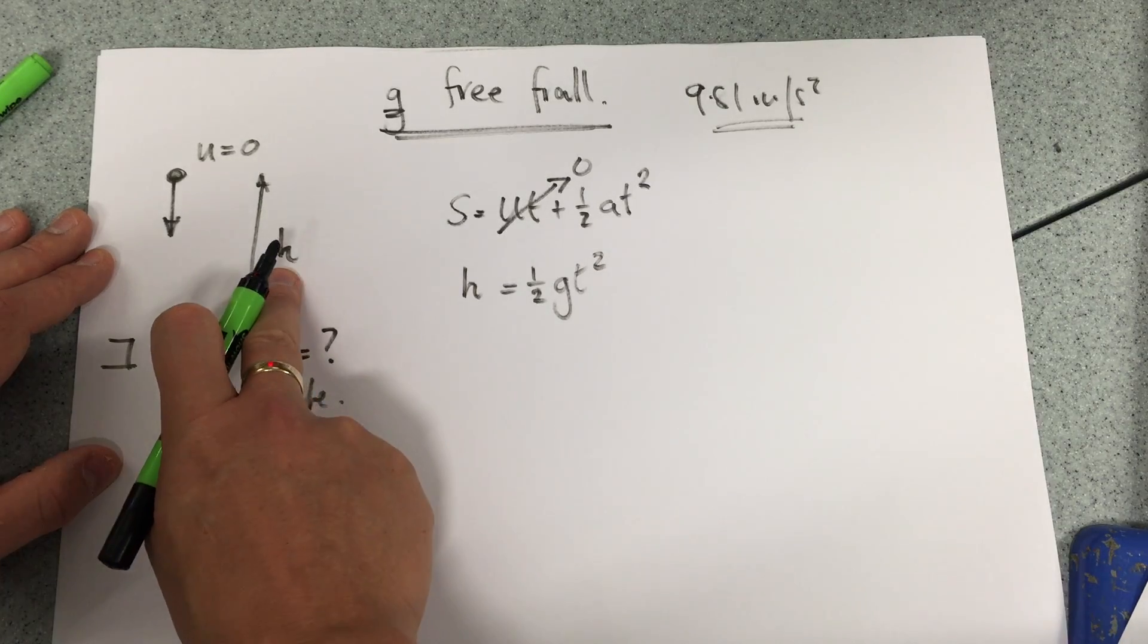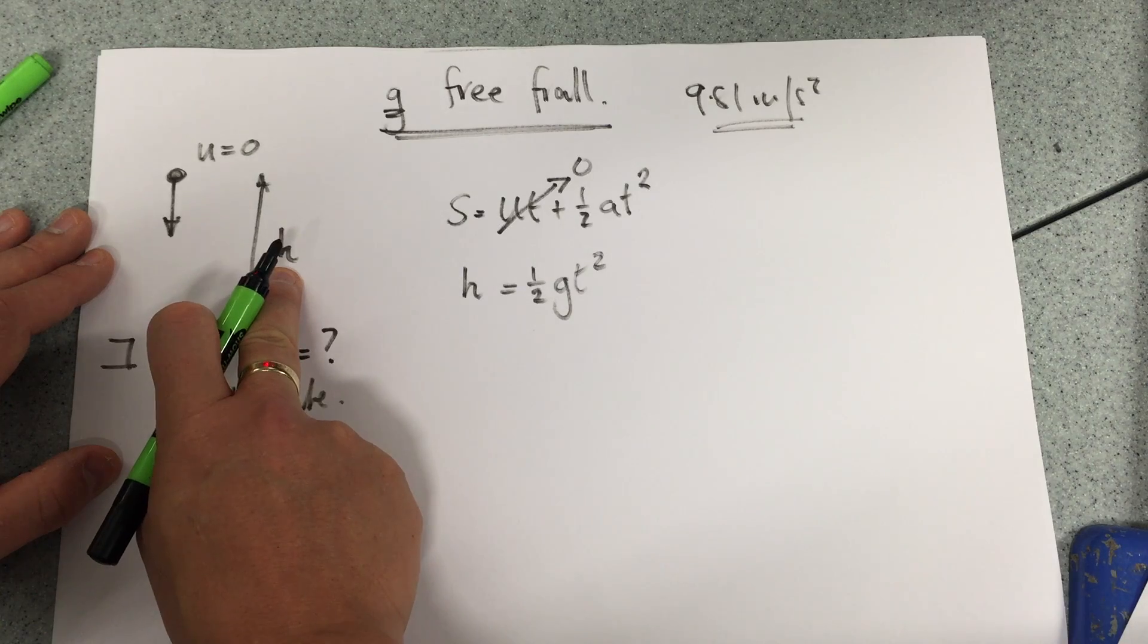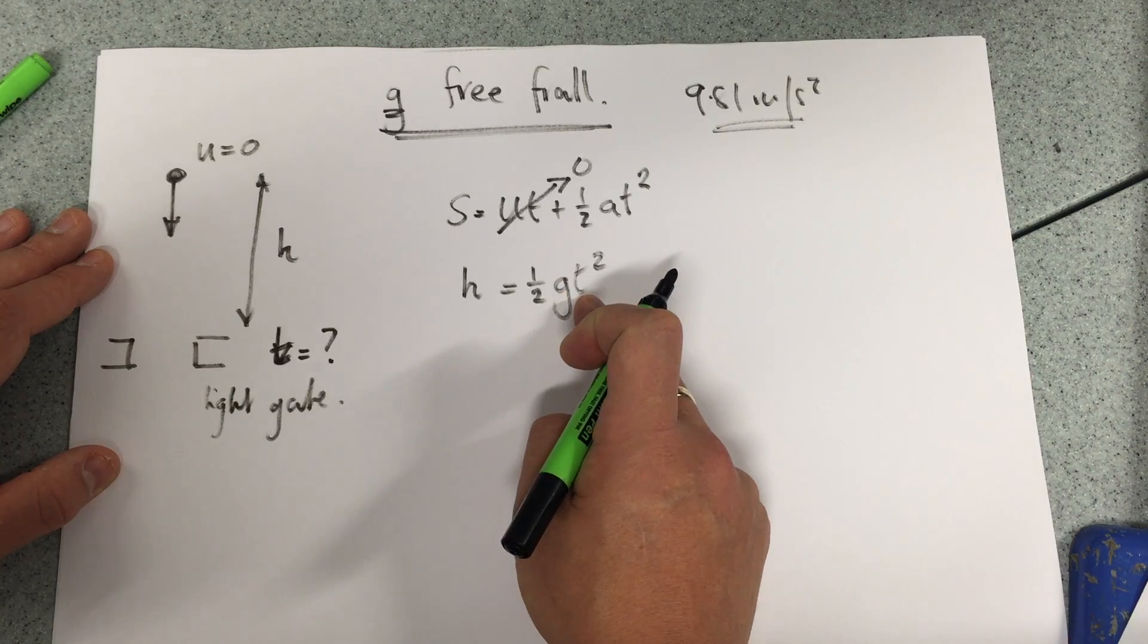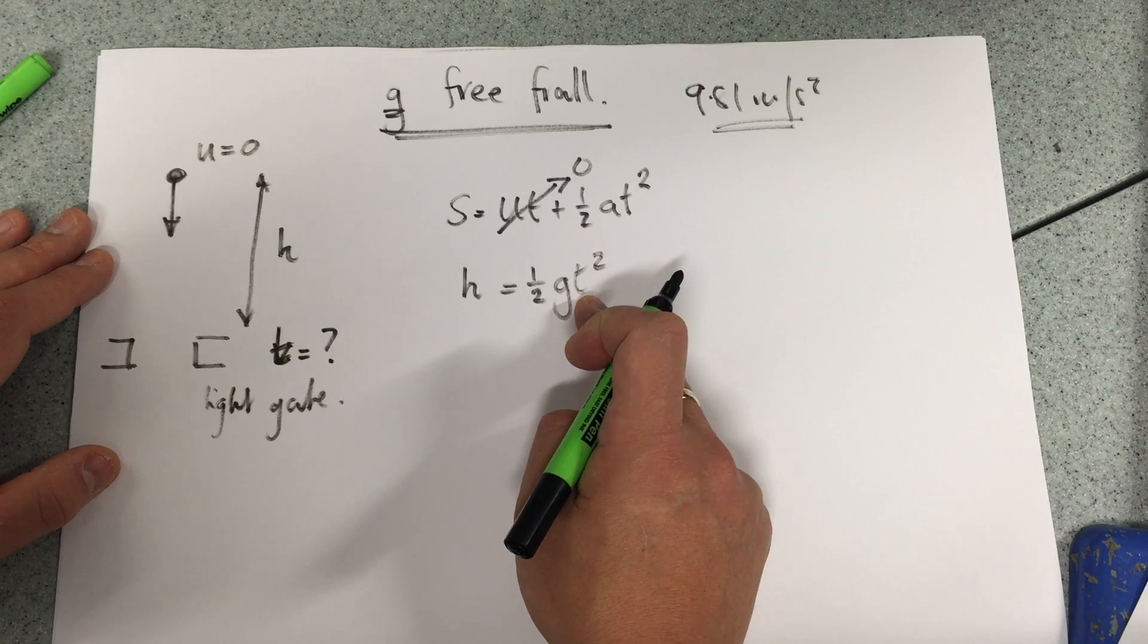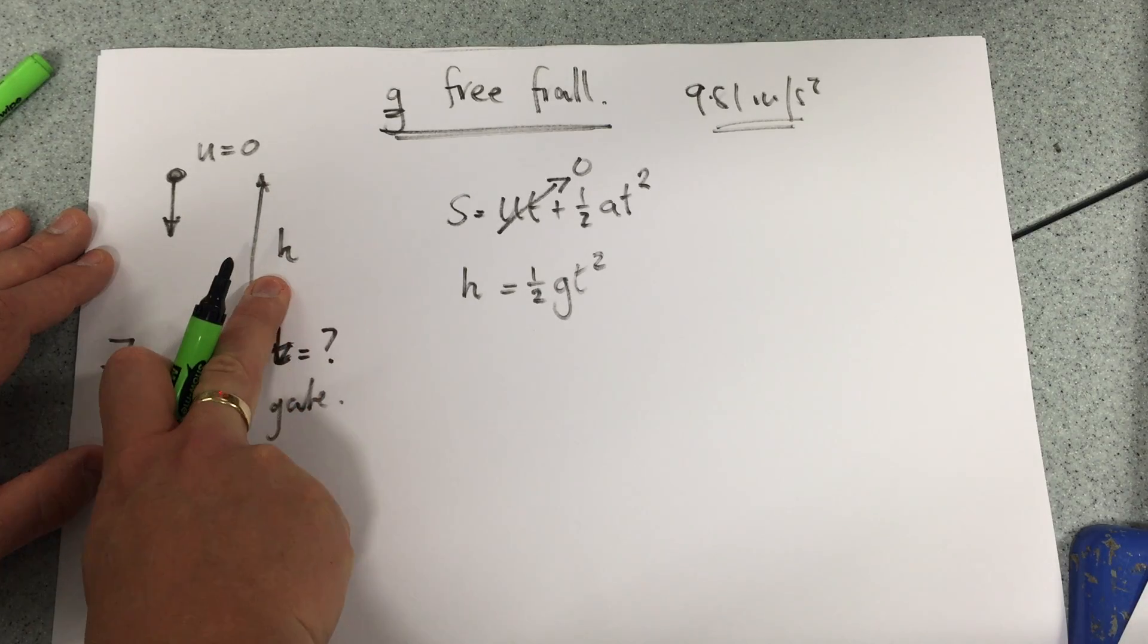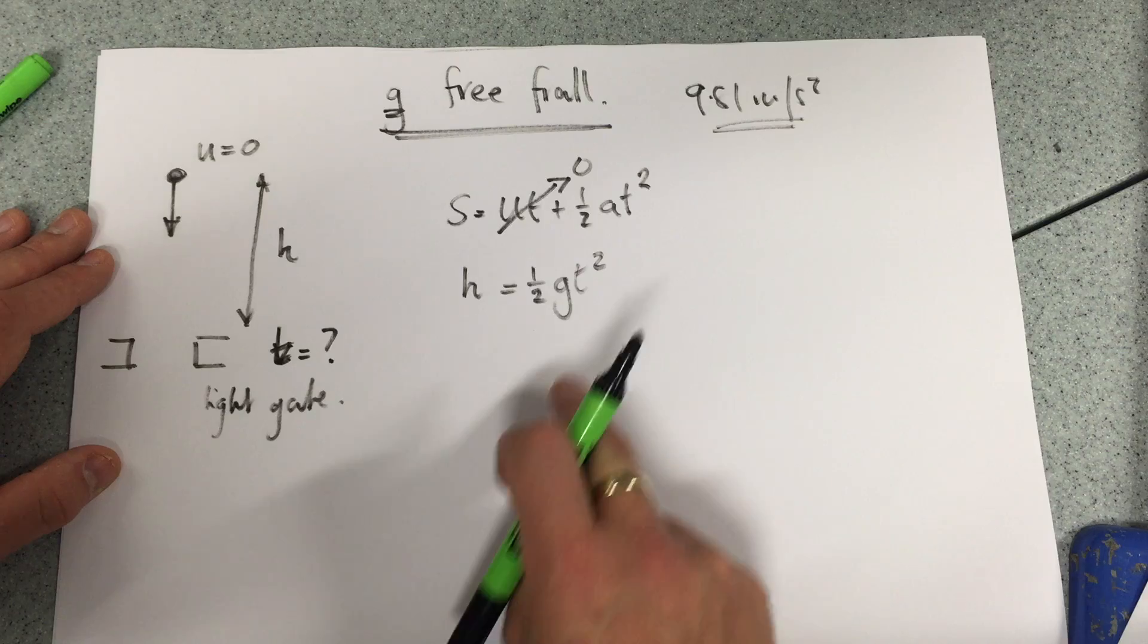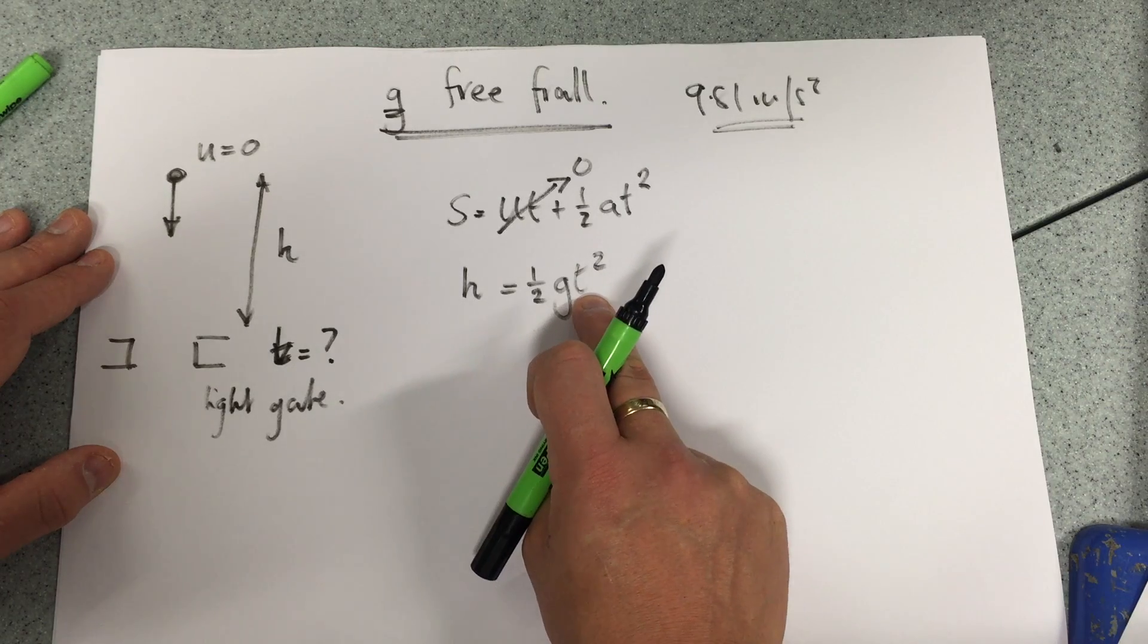So if we measure h and make that our control variable, and then we find t and measure that, which is our dependent variable. Sorry, h is our independent variable, we're going to then measure our time, which is our dependent variable.